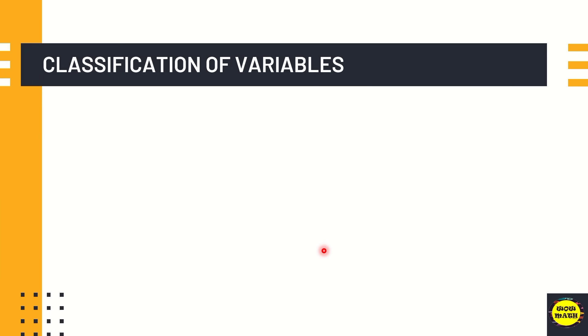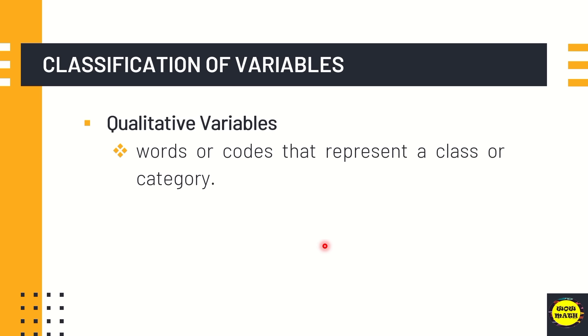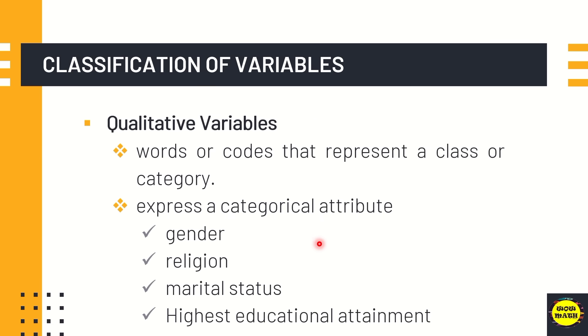So we can classify variables into two. First, that is qualitative variables. When you say qualitative variables, that is words or codes that represent a class or category. It also expresses a categorical attribute. For example, gender, so you can categorize like male or female, religion, marital status, and the highest educational attainment.